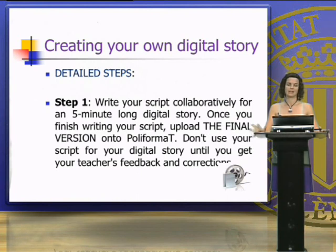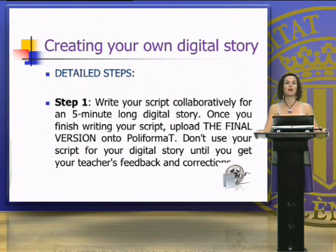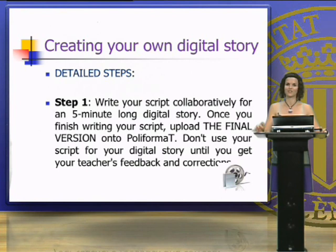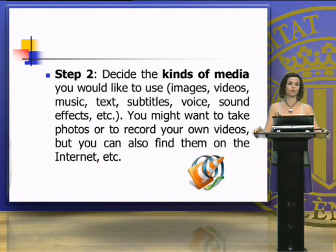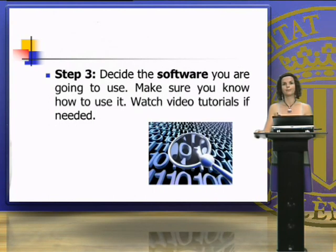Here's a list of detailed steps. Step one, as mentioned, is to write your script collaboratively for a five-minute or eight-minute-long digital story. Once you finish writing your script, upload the final version onto PoliformaT. Do not use your script for your digital story until you get your teacher's feedback and corrections, otherwise you'll have to re-record. Step two is to decide the kinds of media you'd like to use — you might take your own photos or record your own videos, or find them on the internet. Remember that these need to be free, open-source resources.